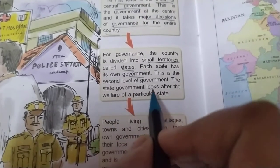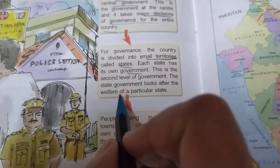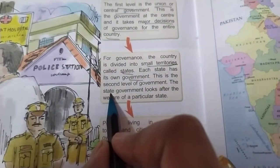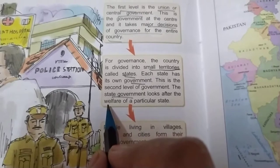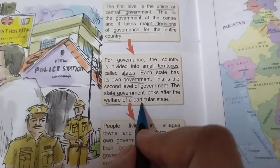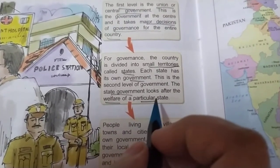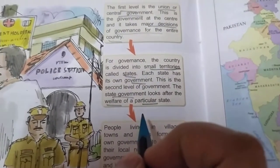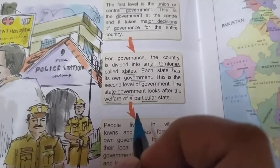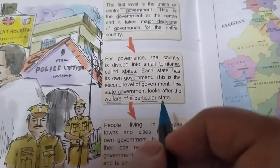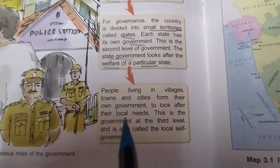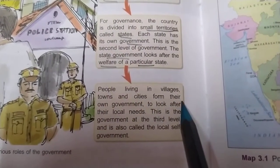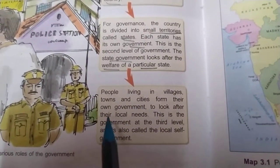The State Government looks after the welfare of a particular state. They will look after whether all the people in their particular state are happy or not. They make different rules and regulations so that the people can live peacefully.